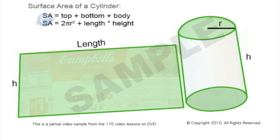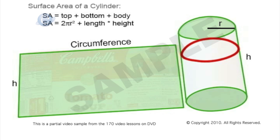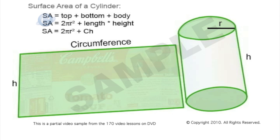And we also know that the length of the rectangle is equal to the circumference or the distance around the can of soup. So we could say 2 pi r squared plus length times height or we could say 2 pi r squared plus circumference times height. And we'll define these terms in just a minute.